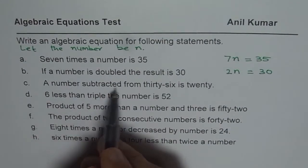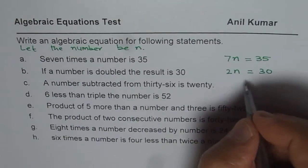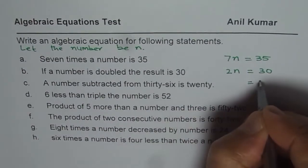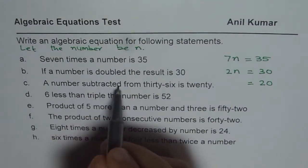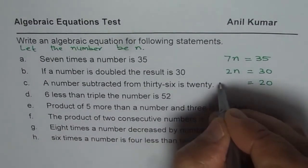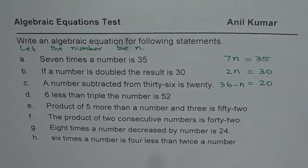A number subtracted from 36 is 20. Is 20 means, after equal to, you have to write the number. First part is, a number subtracted from 36. So it is 36 minus n. You get the idea. That is how you should get this equation.